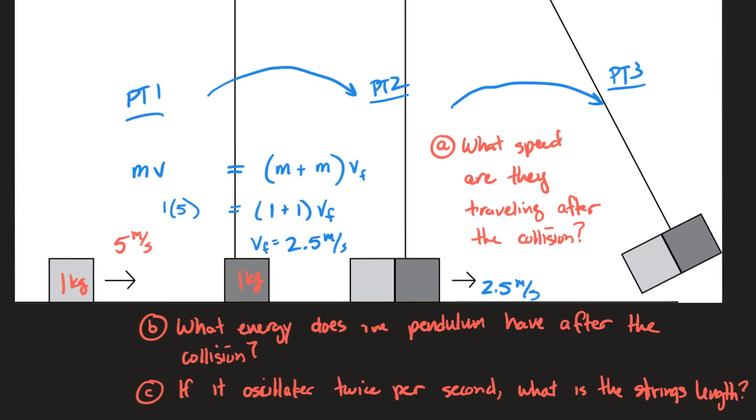So let's take a look at part b. In part b we're asked what energy does the pendulum have after the collision. It's a trick question in a way, because the pendulum actually begins at this moment.